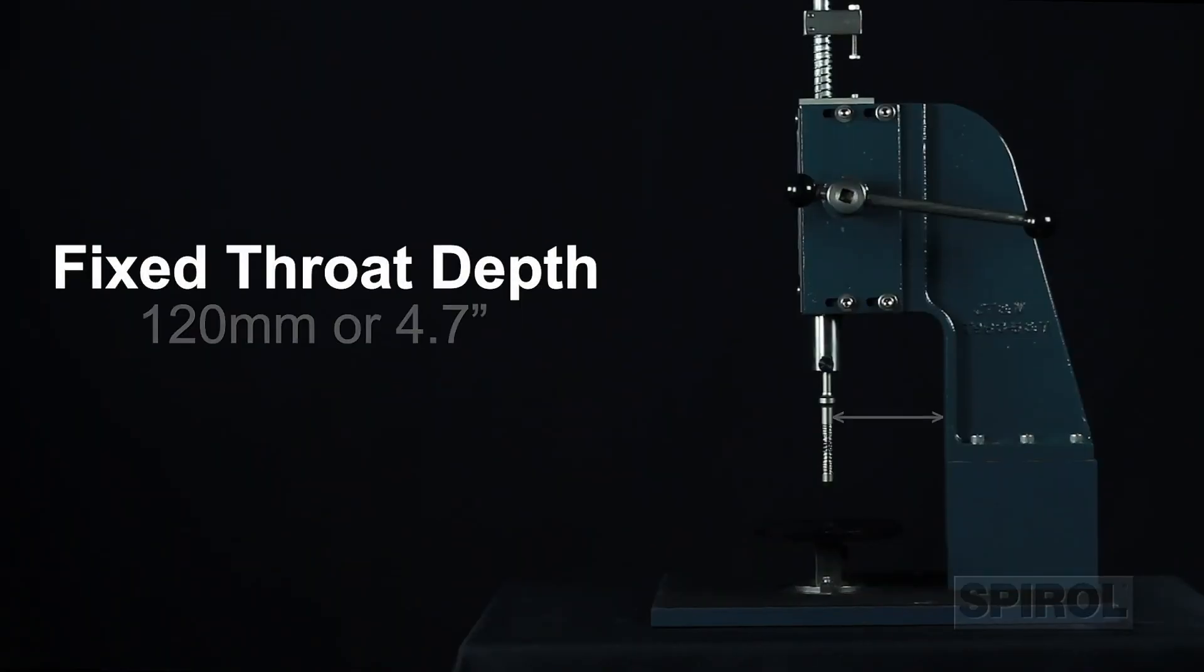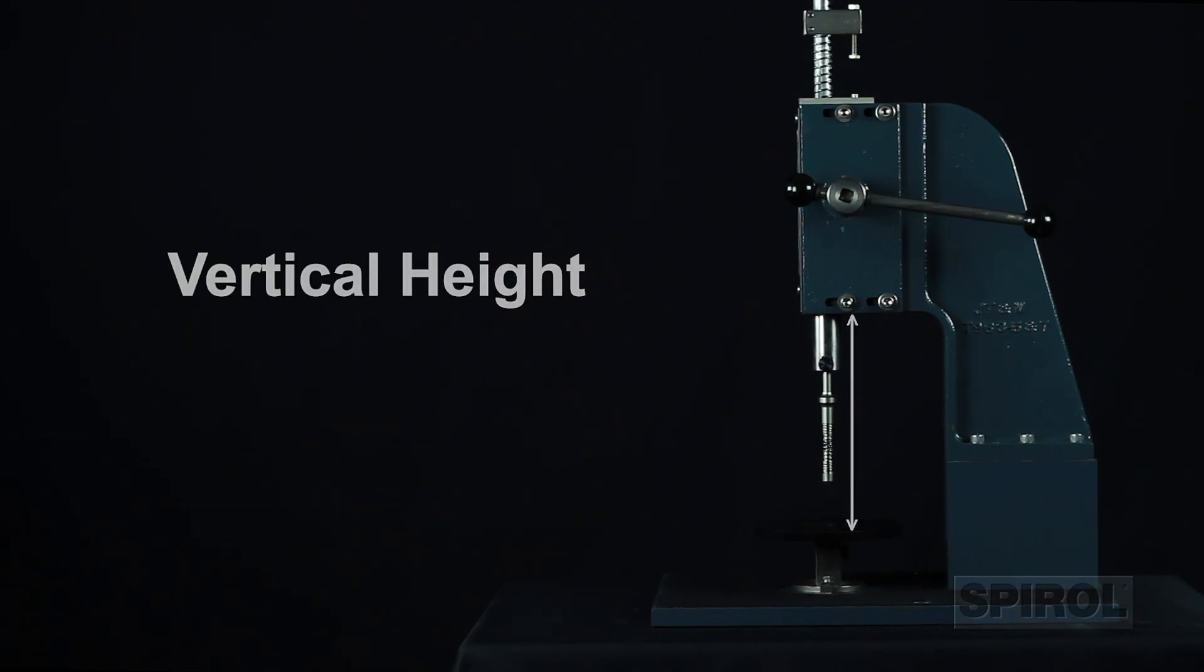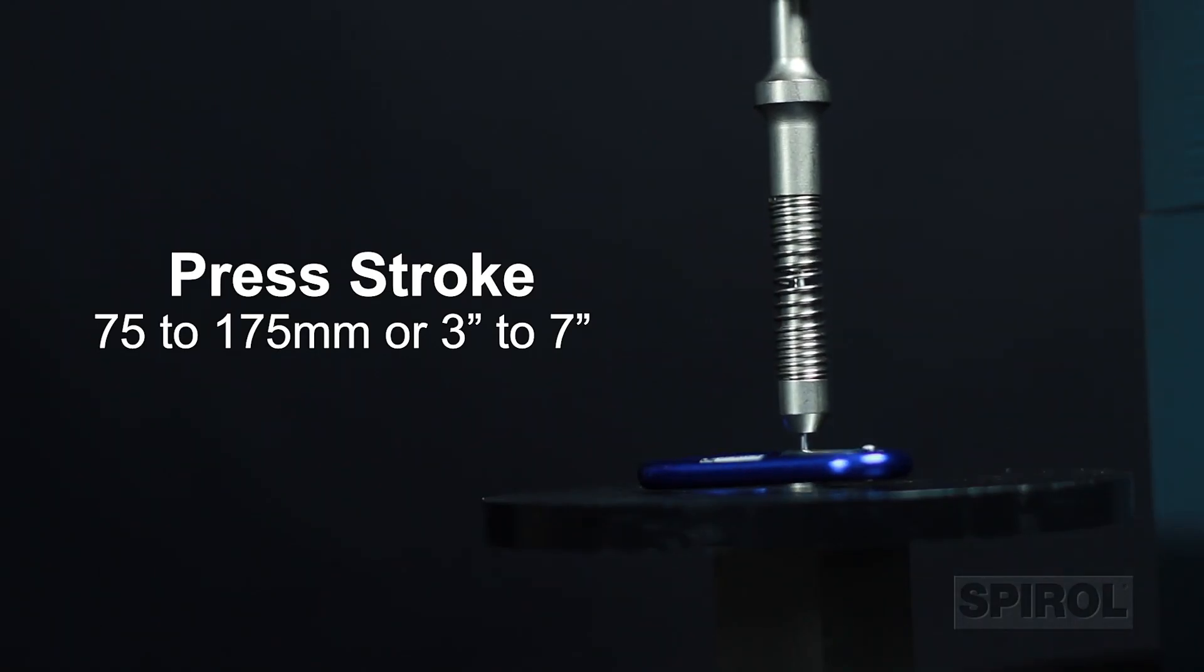The fixed throat depth is 120 millimeters or 4.7 inches, however the vertical height is adjustable with the use of spacer blocks. Press stroke is 75 to 175 millimeters or 3 to 7 inches.